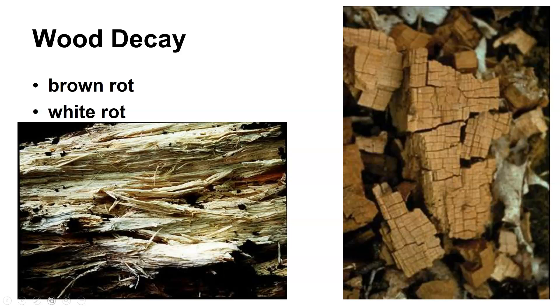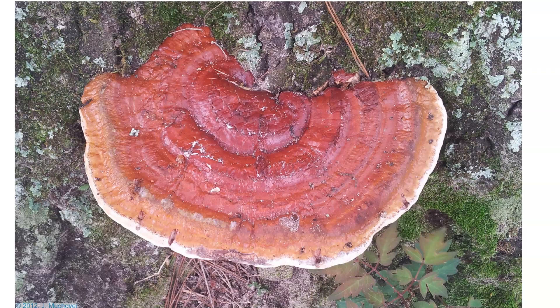So you can see different types of rot on wood — we call this wood decay. There are a lot of different fungi that do this, and researchers are looking for fungi that can break down lignin, because we might be able to use that for alcohol production.